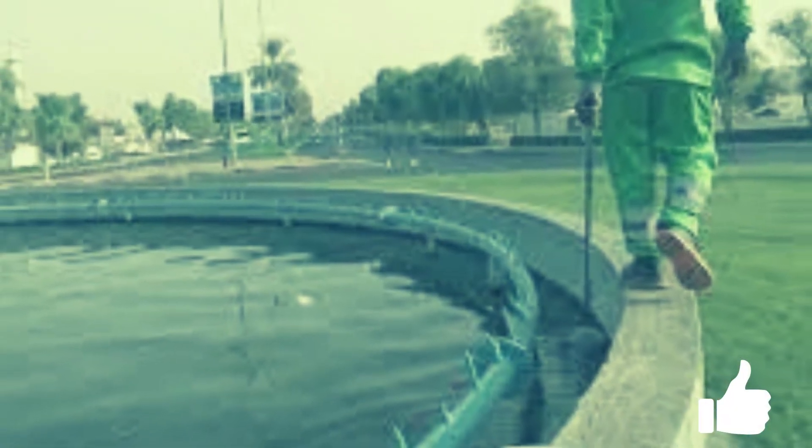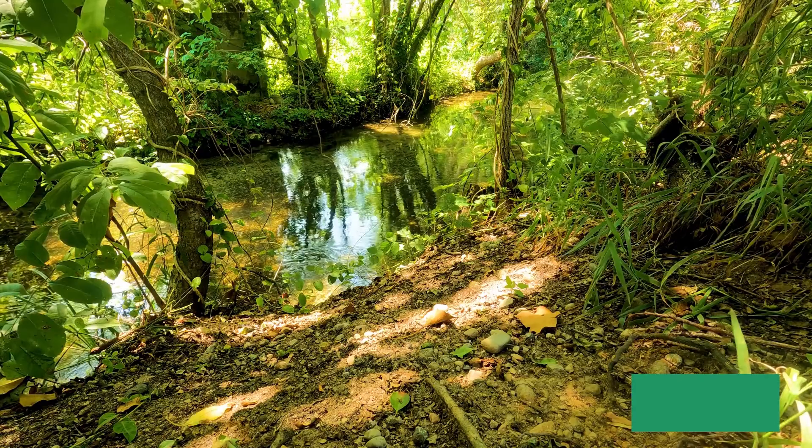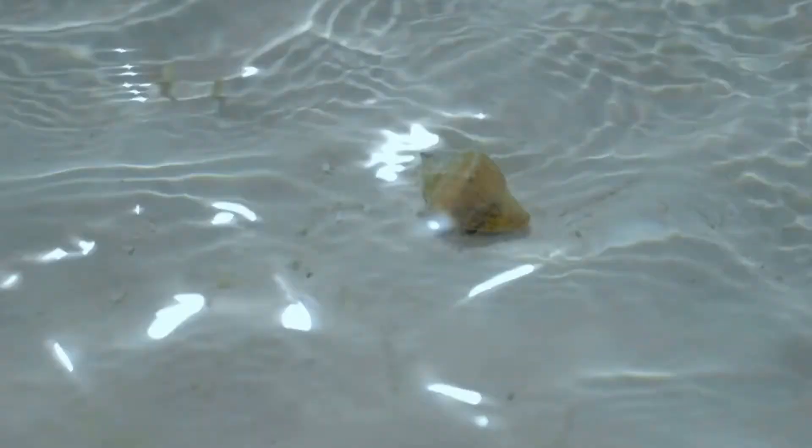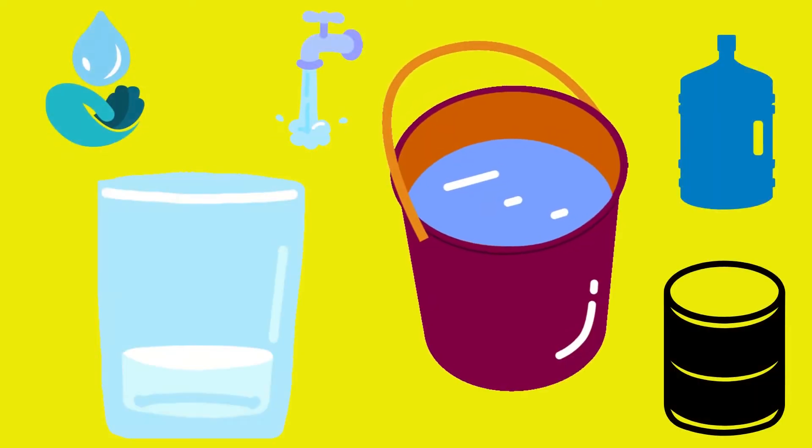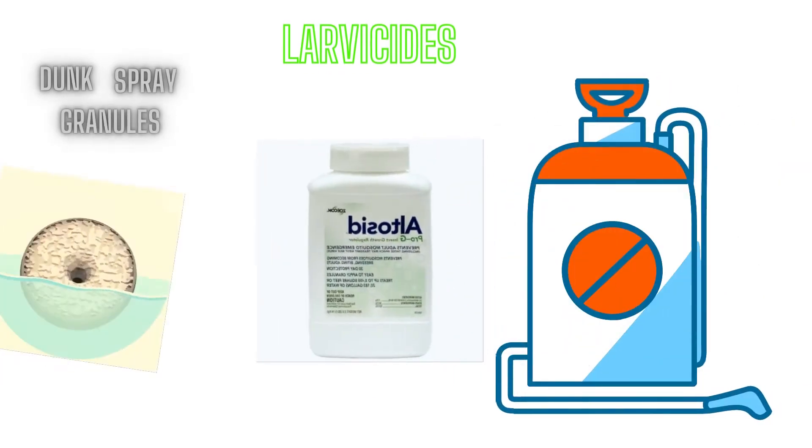Remove all stagnant water. Cover uncovered water tanks, basins, drums, etc. Flush unnecessary water. Apply larvicides in breeding sites.